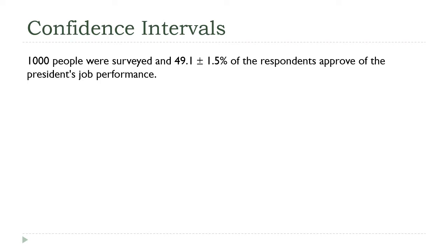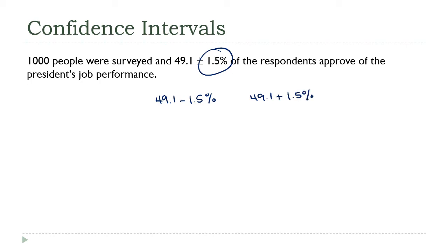Most of you have experience with the idea of a confidence interval, although you might not have known that's what it was. In any election year you see statements like this — somebody does a survey, they collect a sample, and then they do two things: they calculate the proportion of the sample that approves of the president's job performance, and they calculate the margin of error — that's this plus or minus part. This range from 49.1 minus 1.5 percent up to 49.1 plus 1.5 percent is what's called a confidence interval.